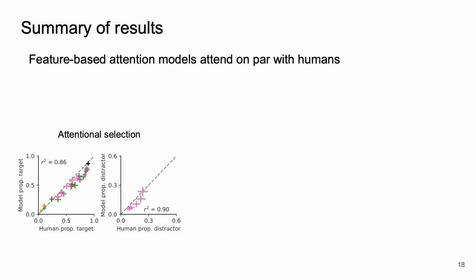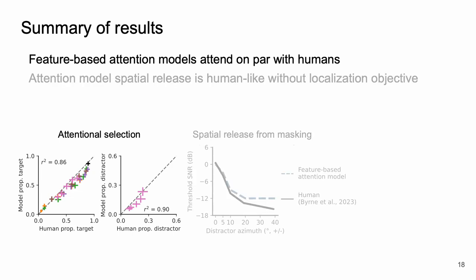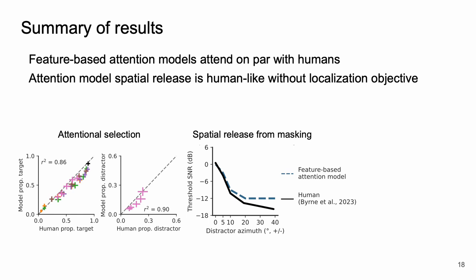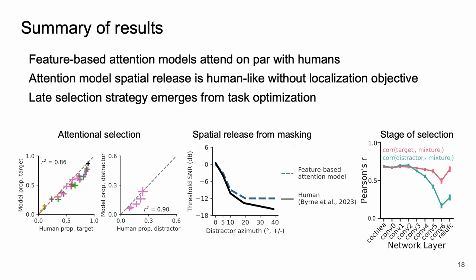To summarize, I've shown you that models of feature-based attention learn to attend on par with humans in speech-on-speech settings and explain much of the variance in human accuracy and errors. I've shown you they also learn spatial release from masking that's on par with humans without an explicit localization objective in training. And finally I've shown you they learn a late selection strategy just as a consequence of task optimization.